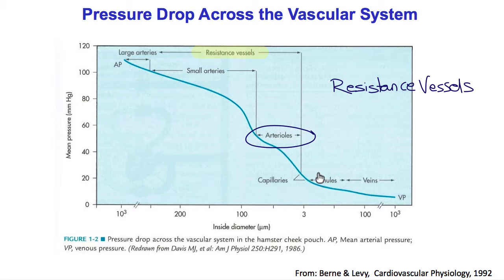As we continue down the circulation to the capillaries and then back to the veins, the pressure drops are smaller only because by now three-quarters of the pressure has already dropped, and so there isn't much additional capacity for further pressure drops.